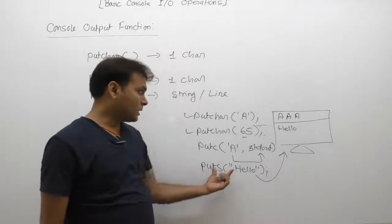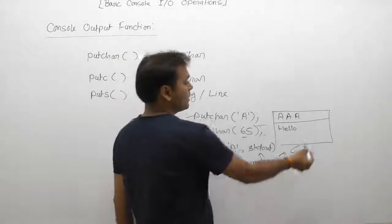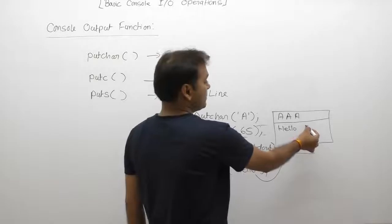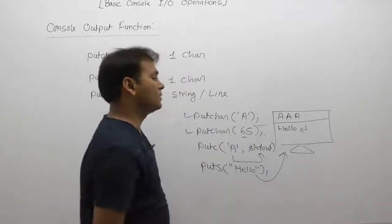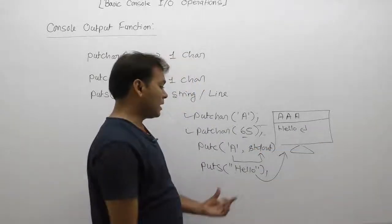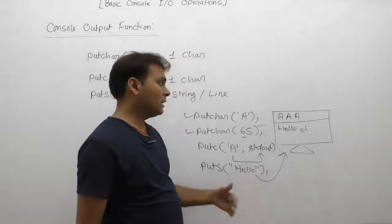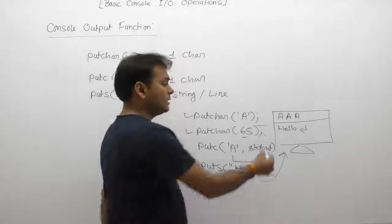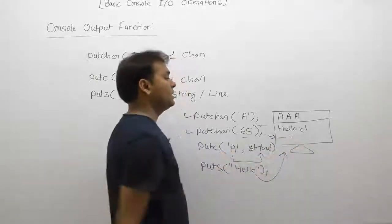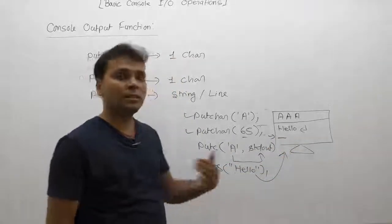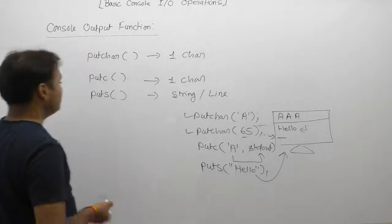The puts function, after displaying the given message on the monitor, will automatically change the cursor to the next line — that is, it automatically appends a newline character after the message.